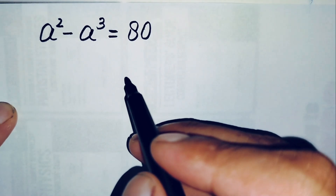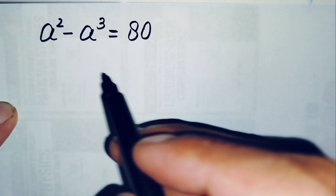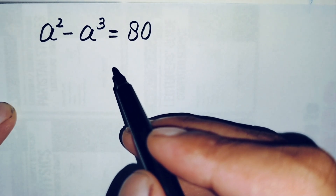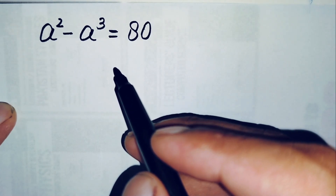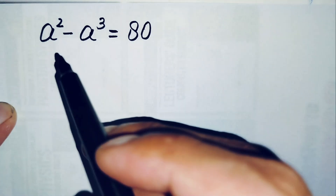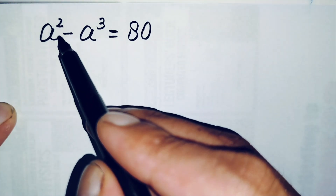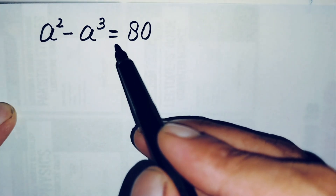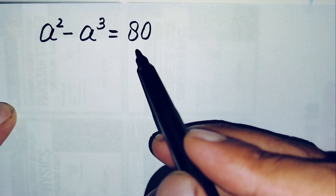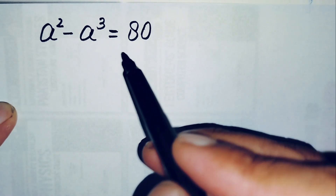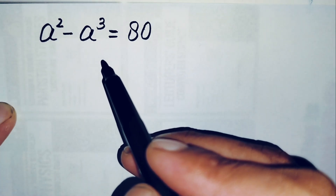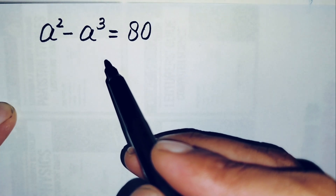Hello everyone, you are welcome. How to solve this nice and interesting exponential math problem, which is a squared minus a cubed is equal to 80. So how can we solve this exponential math problem?